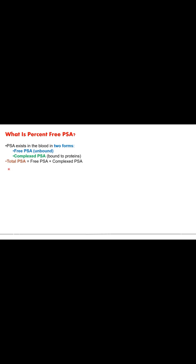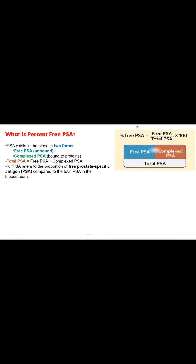The sum of both these fractions gives the total PSA value. Percentage free PSA is the proportion of free prostate specific antigen to the total prostate specific antigen in the blood. It is calculated by dividing the free PSA levels by the total PSA levels, multiplied by 100.